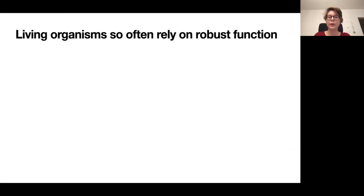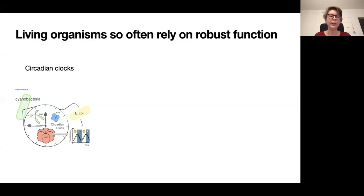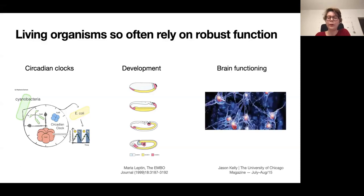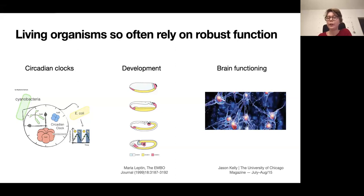In living organisms, many processes rely on robust functioning. Examples include circadian clocks in bacteria, development of a full organism, or brain functioning — all of which should give robust results under varying environments and conditions. Since biological processes are often stochastic in nature, our approach is to consider whether we can define topological structures in stochastic processes that could help achieve robust behavior in these systems.